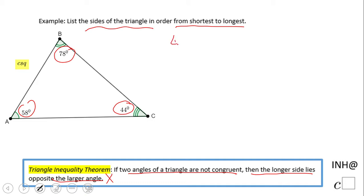So what I suggest you do here, write the angles from smallest to largest: 44 degrees less than 58 degrees less than 78 degrees. What is that 44? That is the measure of angle C, less than what is that 58, the measure of angle A.